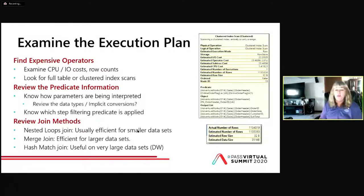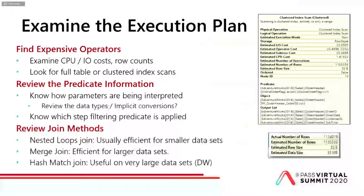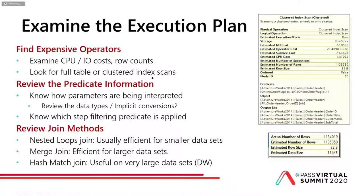The first thing I like to do when I find the SQL to work on is to examine the execution plan. I look for expensive operators — I look at CPU and IO costs on the properties, and the row counts being returned. I compare actual rows to estimated rows to see how good my statistics are, because the optimizer will only be as good as the statistics it has. I also look for full table or clustered index scans, because those are probably reading far too many rows — if it's a small result set and you're reading all that data, there's room for improvement.